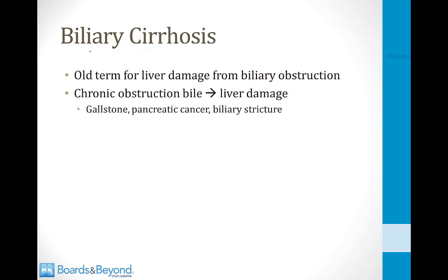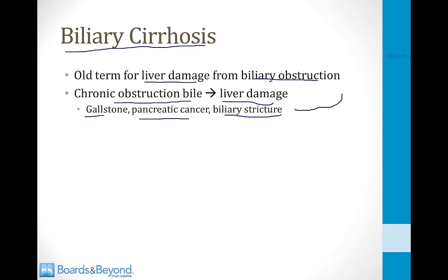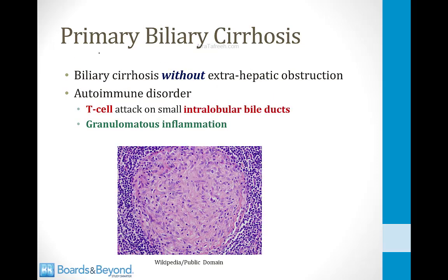The next disorder is called primary biliary cirrhosis. The term biliary cirrhosis refers to liver damage from biliary obstruction. Years ago, if you had chronic obstruction of biliary flow from gallstones, pancreatic cancer, or biliary strictures, you would eventually develop cirrhosis secondary to biliary obstruction. Primary biliary cirrhosis is biliary cirrhosis that develops without an extrahepatic obstruction — without a gallstone or a mass in the pancreas. The obstruction is inside the liver, and it leads to cirrhosis.